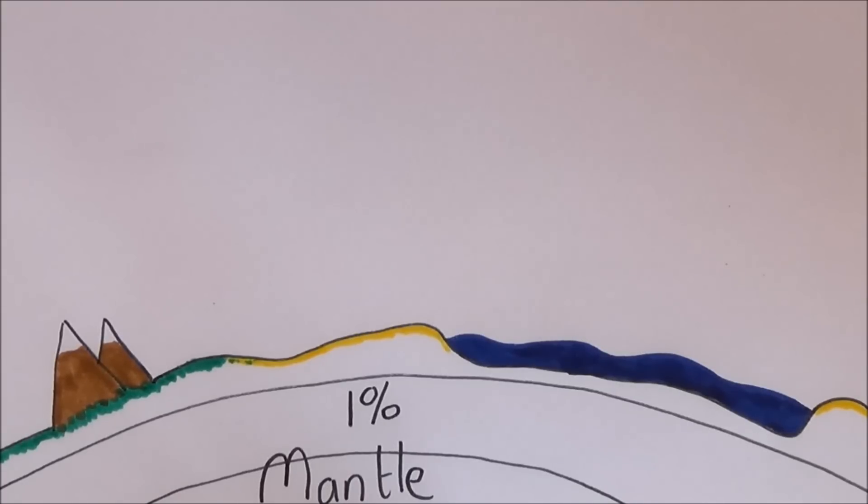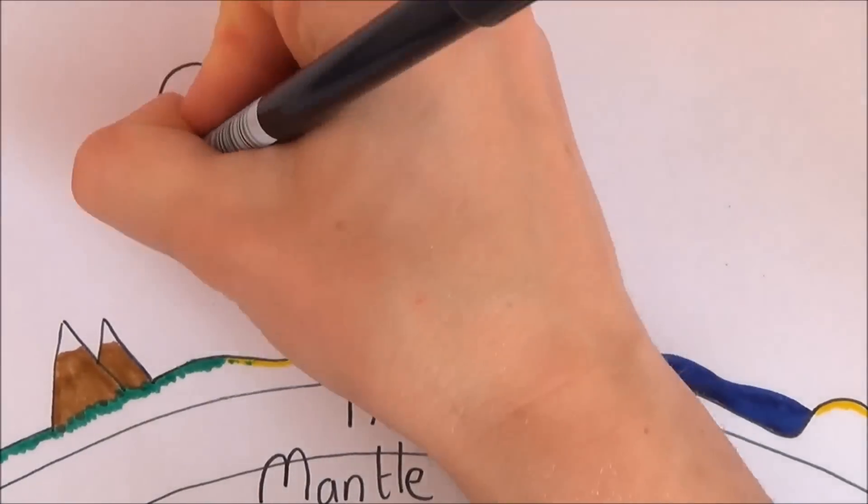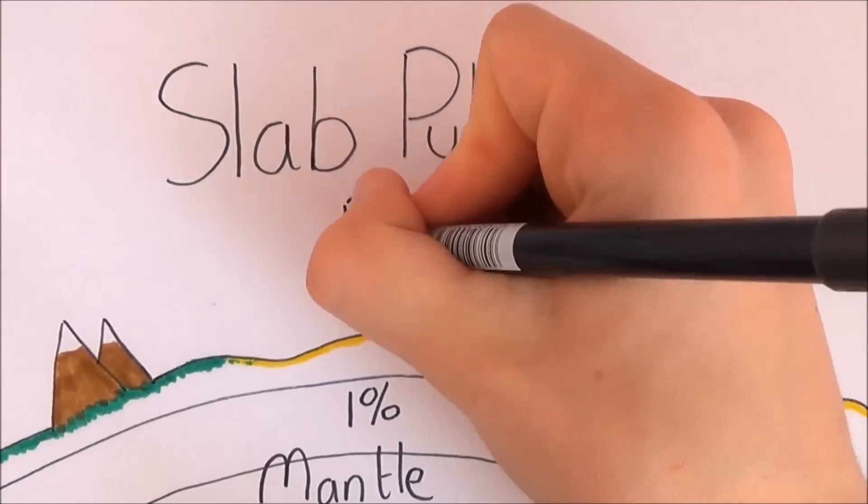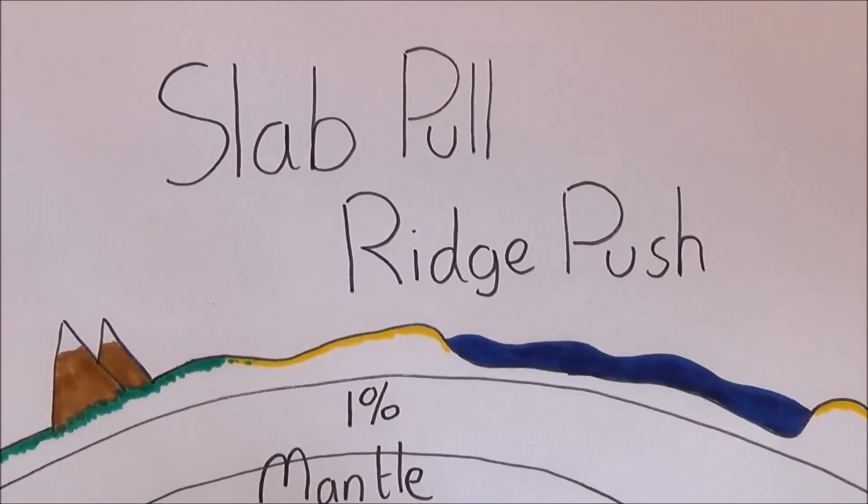There are still convection currents, but they are not strong enough to move the plates around. Plate tectonics is due to something called slab pull and ridge push, but that's for another time.